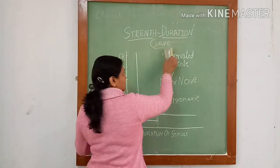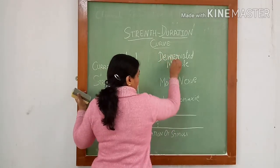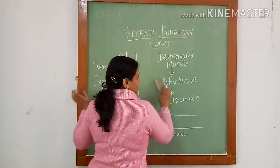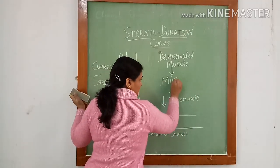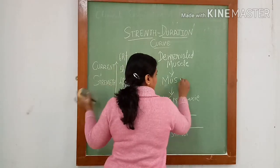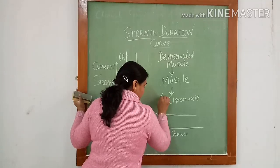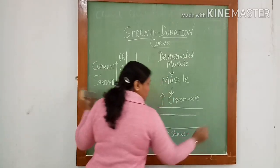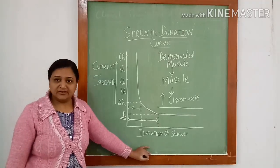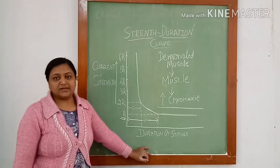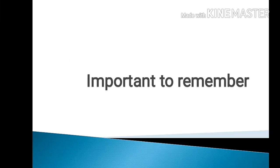Whereas in case of denervated muscle, motor nerve is not there, so it is stimulated by the muscle. So its chronaxie is high. By this we can know whether the muscle tissue is innervated or denervated in case of motor neuron injury. So it is important points to remember.